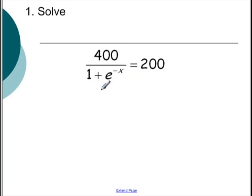So we're going to multiply both sides by 1 plus e to the negative x. So on the left we have 400 and on the right we have 200 times 1 plus e to the negative x.